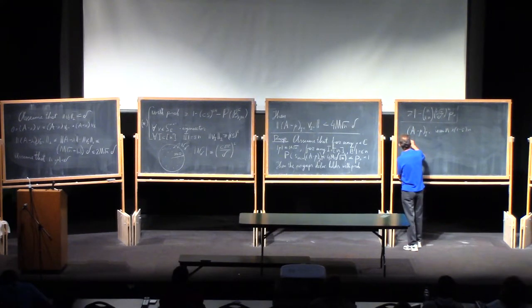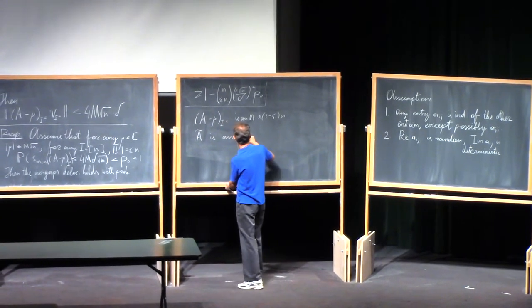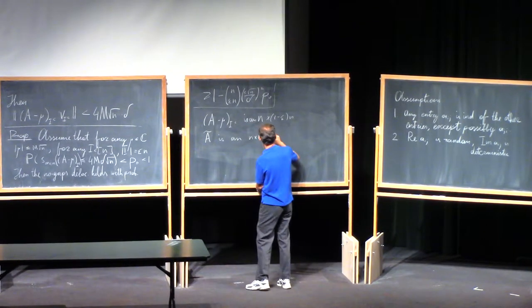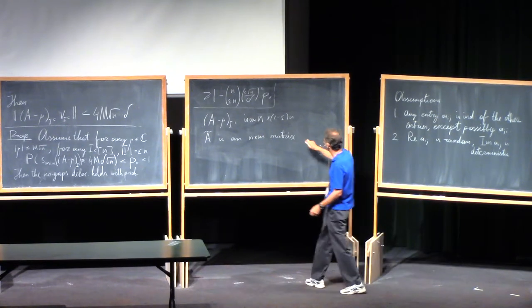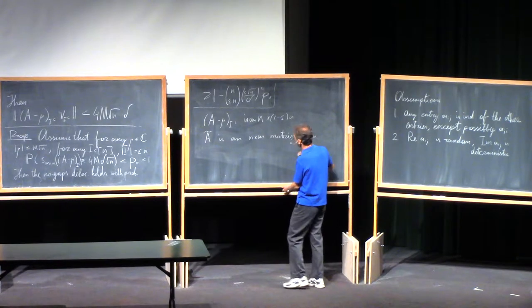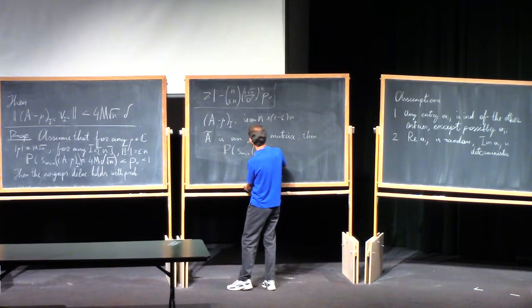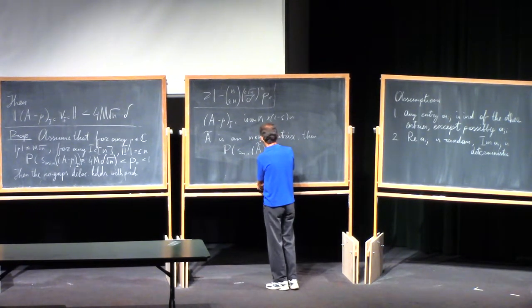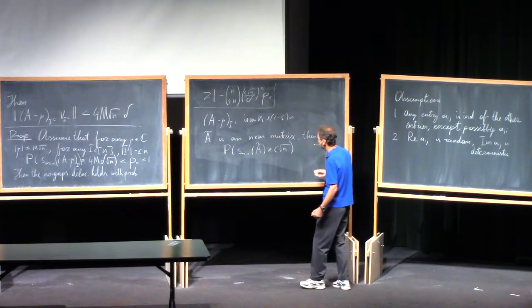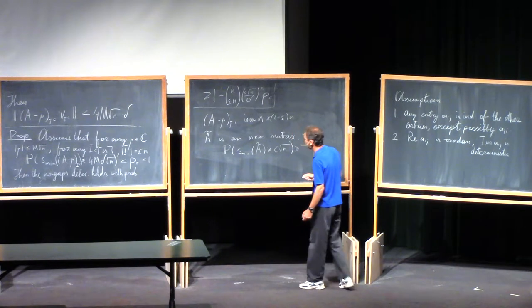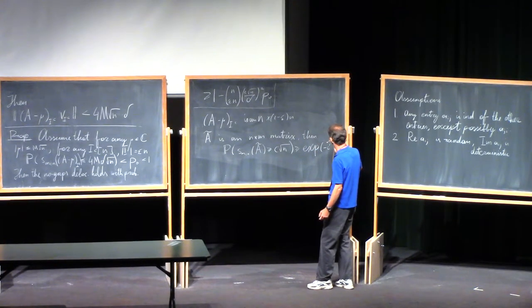So if, let's say, if A tilde is an n by m matrix with i.i.d. entries centered unit variance and finite fourth moment, then the probability that the minimal singular value of this A tilde is greater equal than c square root of n will be bounded by the exponential of the power of negative c prime.